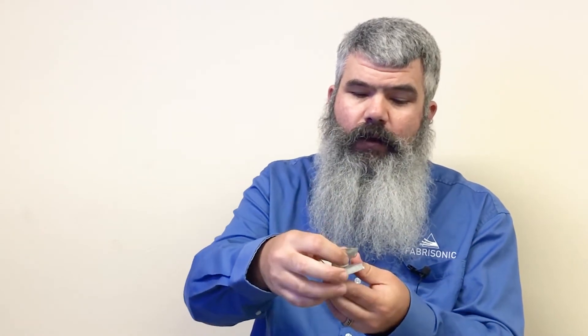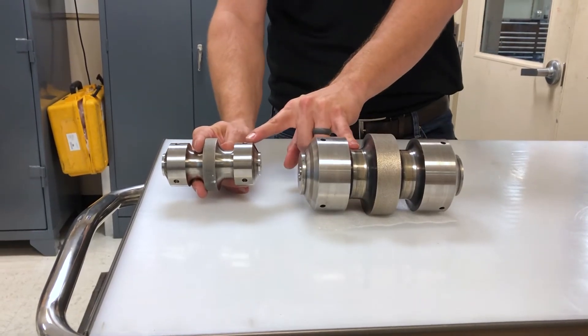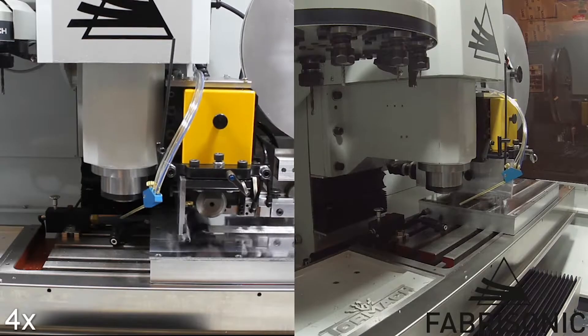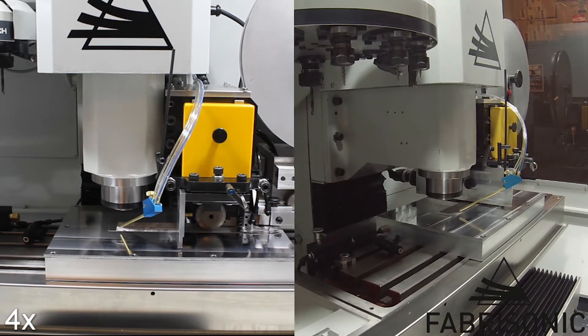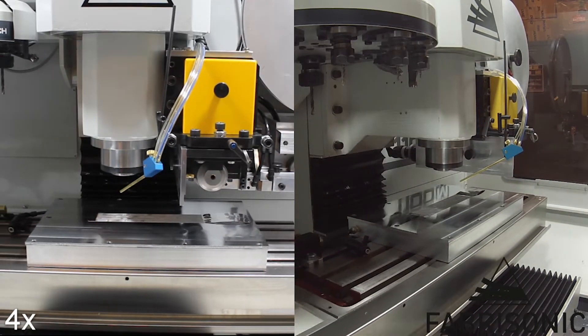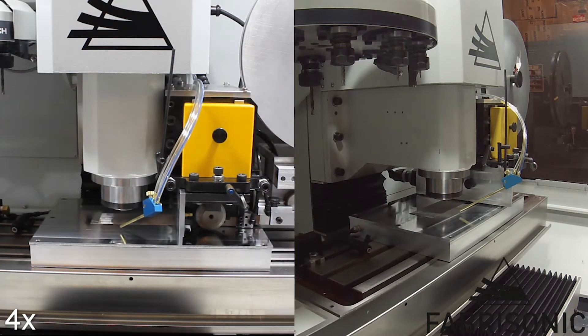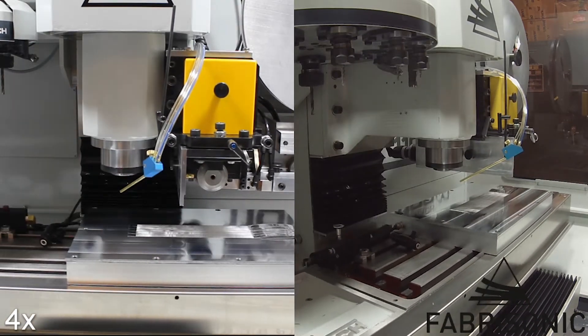So what we do is we fold over the foil onto the material we want to bond and we roll over that with what we call an ultrasonic welder. As it rolls over, it's vibrating the sheet back and forth on the order of 20,000 times a second. That vibration actually scrubs off any impurities, any oils, and most importantly, scrubs off the oxide layer. As soon as you have virgin metal touching virgin metal, Mother Nature takes over and you get a solid state bond.